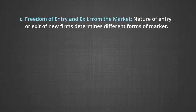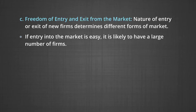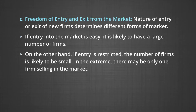Number three, freedom of entry and exit from the market. The nature of entry or exit of new firms determines different forms of market. If entry into the market is easy, it is likely to have a large number of firms. On the other hand, if entry is restricted, the number of firms is likely to be small. In the extreme, there may be only one firm selling in the market.